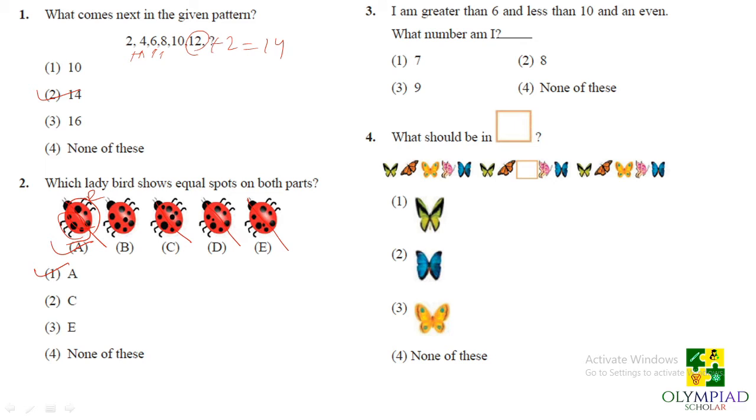I am greater than 6 and less than 10 and even. See the numbers which are greater than 6 and less than 10 are 7, 8 and 9 and it's an even number. So only 8 can be taken into consideration. So option 2, 8 is our correct answer.